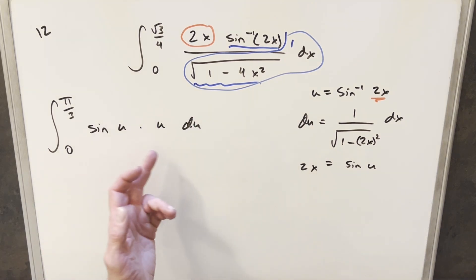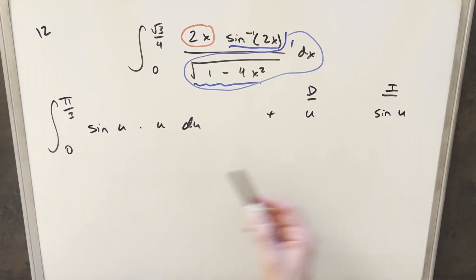But now with two functions here, u times sine of u, this looks like a good case for integration by parts. So going ahead with this, I'm going to use the DI method or tabular integration. I've already decided I want to differentiate u and integrate sine u. The reason I like to differentiate u is we can differentiate that all the way down to 0. It's going to become simpler when we do this. Let's just see how this works.